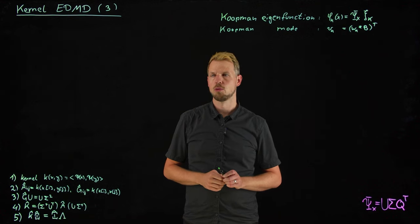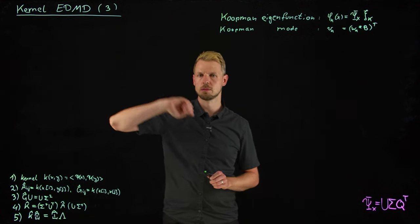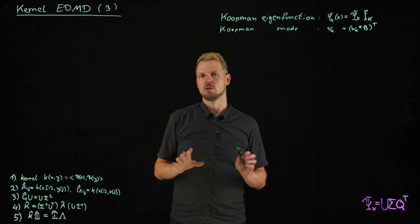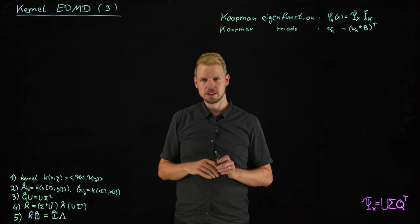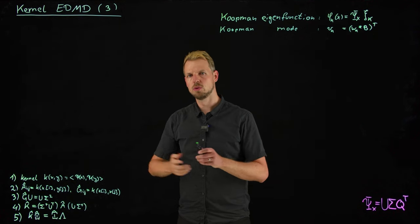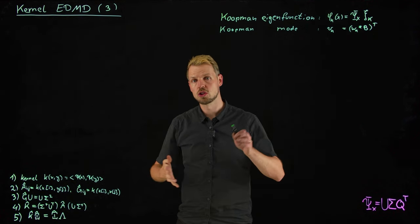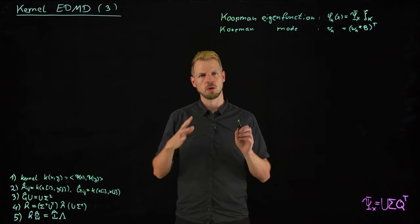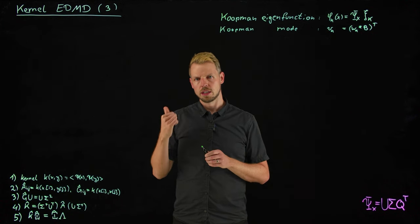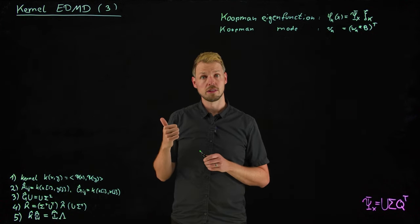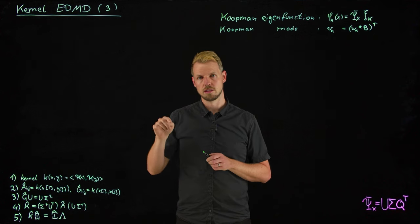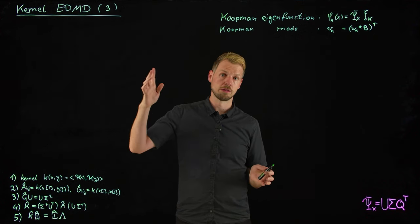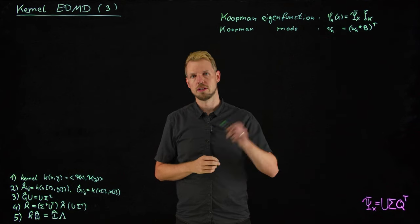Hi everybody and welcome back to part 3 on Kernel Extended Dynamic Mode Decomposition. What we have discussed until now is the issue that if we want to compute DMD or an approximation of the Koopman operator, we run into trouble if either the number of samples is very large, this is little m, or the number of basis functions becomes very large, this capital N.